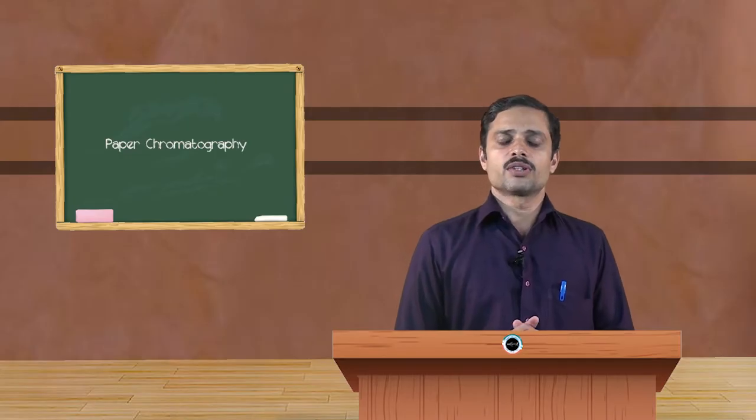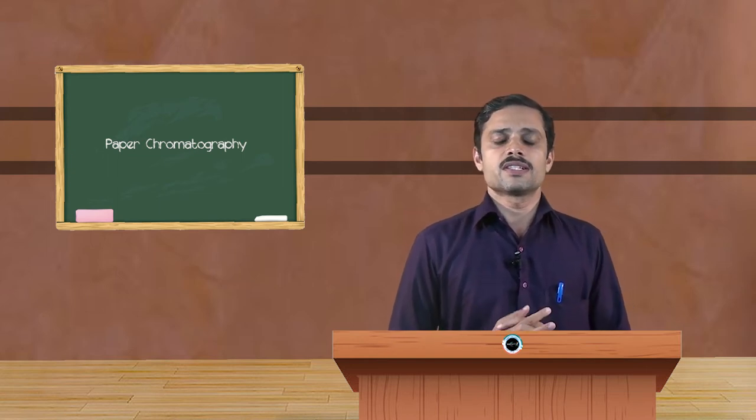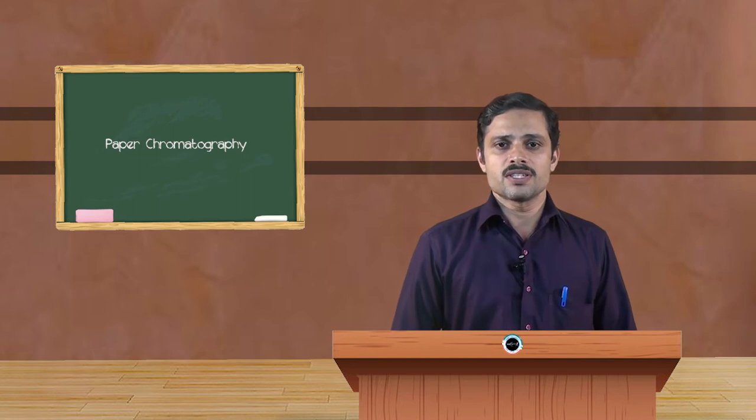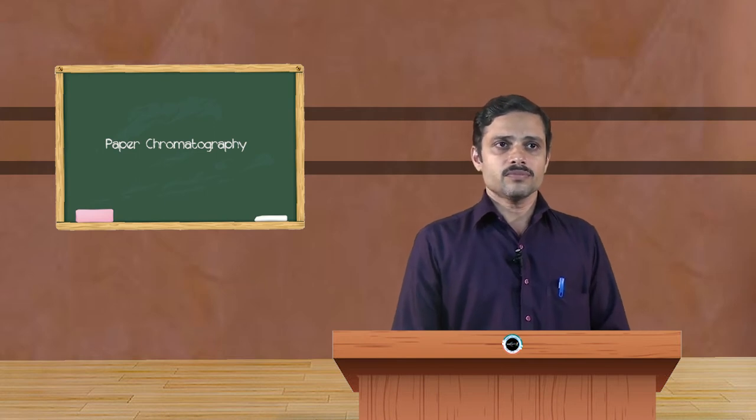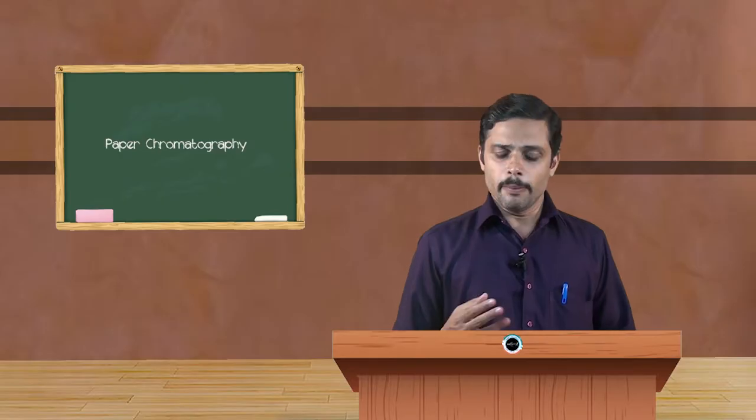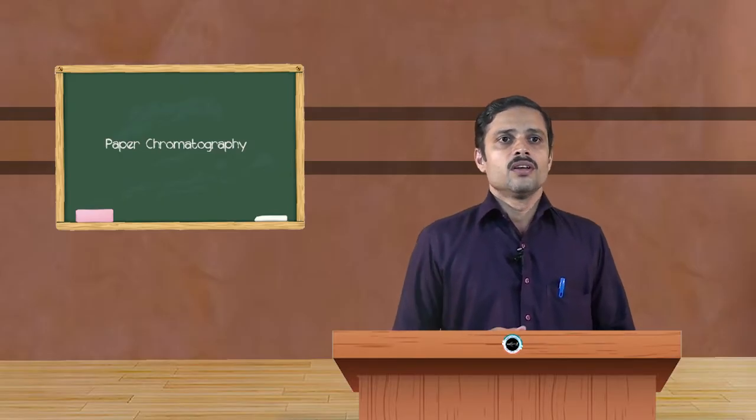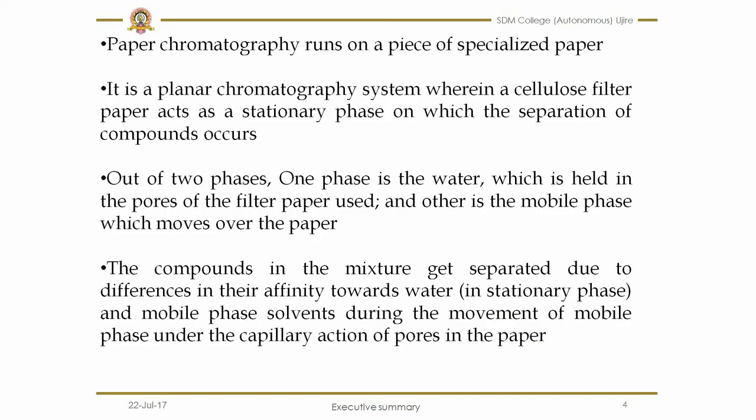As we know, in chromatography there are two phases: mobile phase and stationary phase. In paper chromatography, the cellulose present on the filter paper acts as stationary phase because it adsorbs many molecules present in the sample. Out of two phases, one phase is water which is held in the pores of filter paper and the other mobile phase is the solvent phase which moves on the paper. The compounds in the mixture get separated due to difference in their affinity towards water, affinity towards the stationary phase and the mobile phase.